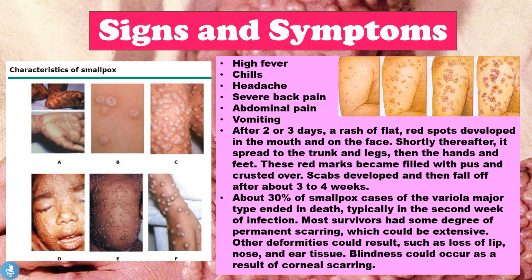So now let's talk about some signs and symptoms of smallpox. The first symptoms patients would present with would be high fever, chills, headache, severe back pain, abdominal pain and vomiting. After two to three days, a rash of flat red spots would develop in the mouth and on the face, and shortly thereafter it would spread to the trunk, legs, hands and feet. These red marks would become filled with pus, crust over, and the scabs would develop and fall off after about three weeks.